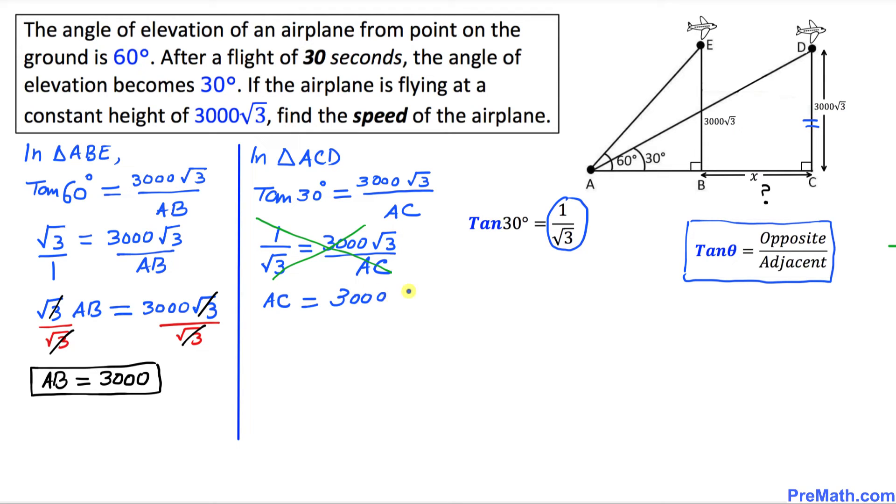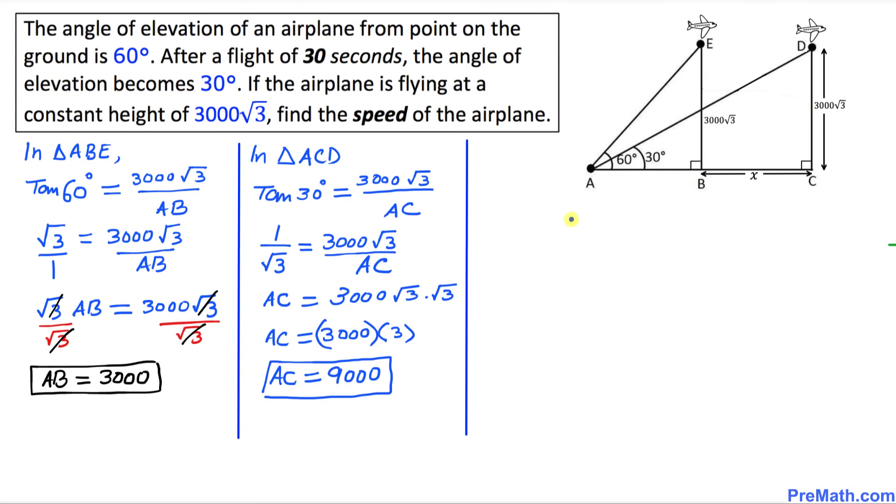I can write √3 times √3, and we know that √3 times √3 is equal to 3, so I'm going to multiply times 3. Thus AC turns out to be 9000. So this length of AC is 9000.